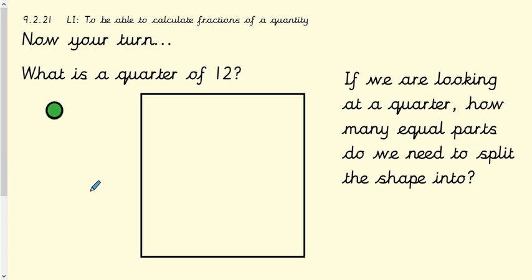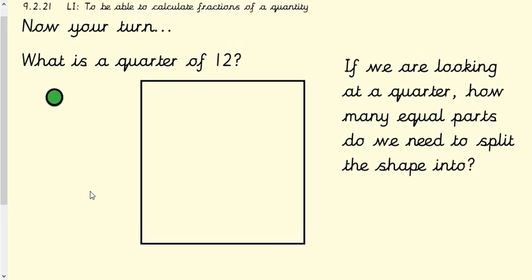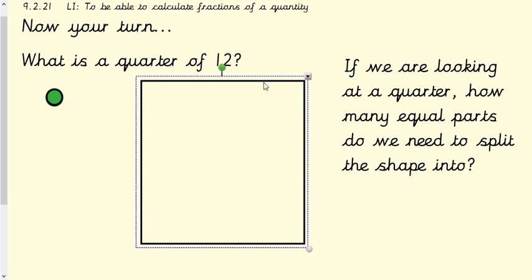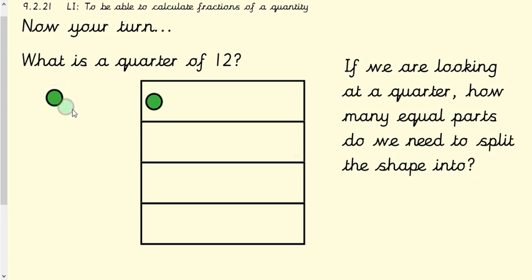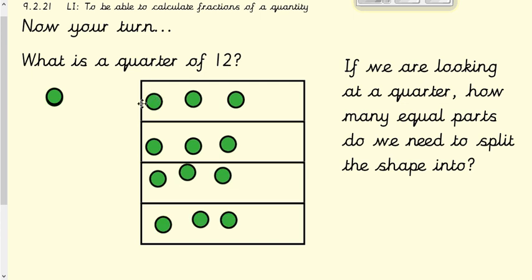Now it's your turn to have a go. You can draw this in your book if you want. Find a quarter of 12 — think about what you're going to split your shape into. It doesn't have to be perfectly neat, just make sure you know it should be equal. Share 12 counters equally into each box and work out the answer. So I'm splitting my shape into quarters — four equal parts — then sharing 12 counters out equally. There are three in each section. So therefore a quarter of 12 is three.